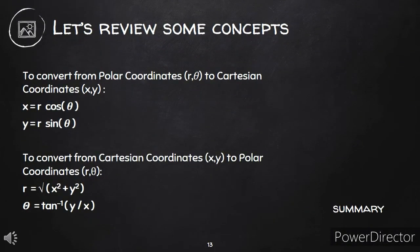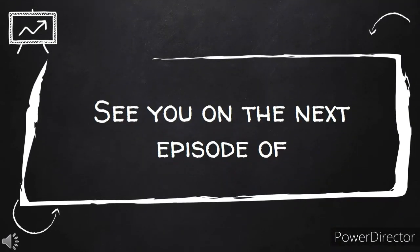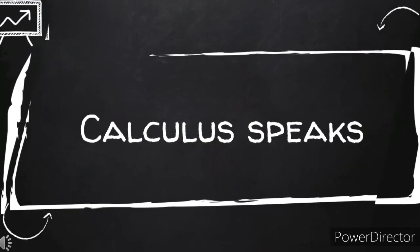Let's review some concepts. To convert from polar to Cartesian coordinates, we use two formulas: x is equal to r cosθ and y is equal to r sinθ. To convert from Cartesian coordinates to polar coordinates, we also use two formulas: r is equal to the square root of x squared plus y squared, and θ is equal to arctan of y over x. We also need to adjust the value of arctan based on what quadrant the point is in. See you in the next episode of Calculus Peaks.